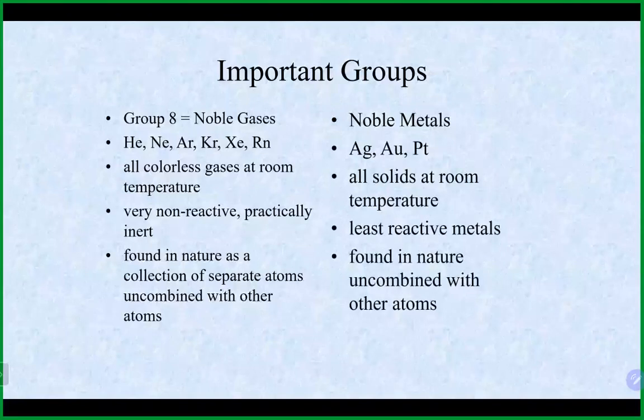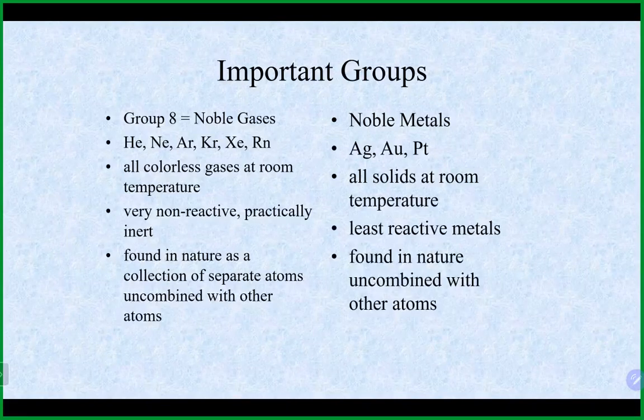Many noble gases are monoatomic — they come as single atoms. Unlike hydrogen, nitrogen, oxygen, chlorine, and fluorine, which come as diatomic molecules (twos), most noble gases come as single atoms.